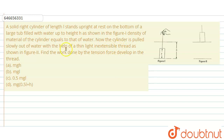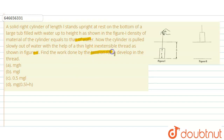Hello everyone. Let us try to solve the given problem. A solid right cylinder of length l stands upright at rest on the bottom of a large tub filled with water up to a height h, as shown in the figure. The density of the material of the cylinder equals that of the water. The cylinder is pulled slowly out of the water with the help of a thin, light, inextensible thread, as shown in the figure. We have to find the work done by the tension force developed in the thread.